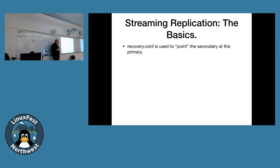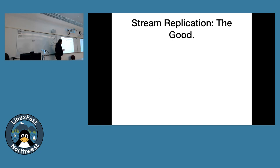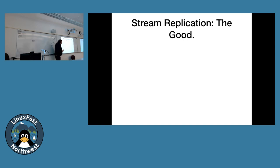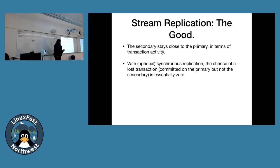You use the recovery.conf file — a configuration file inside the Postgres data directory — to point the secondary to the primary. The secondary always initiates the connection into the primary. The secondary stays very close to the primary; it can stay within milliseconds. Optionally, you can turn on synchronous replication, where the chance of losing a committed transaction is essentially zero — the primary waits to return its commit acknowledgment until one or more secondaries confirm they committed it too.